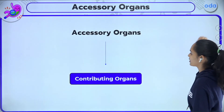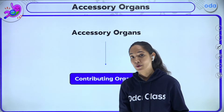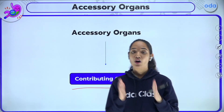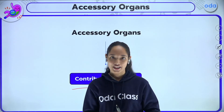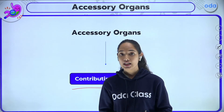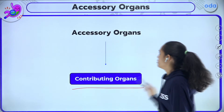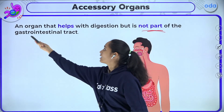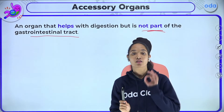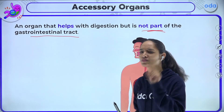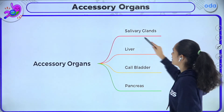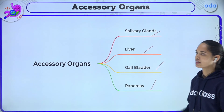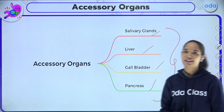Now, what about accessory organs? These are very important contributing organs that help or aid in completing the process of digestion. The digestive system is incomplete without them. They help with digestion but are not part of the gastrointestinal tract. Those organs are the salivary glands, liver, gallbladder, and pancreas.